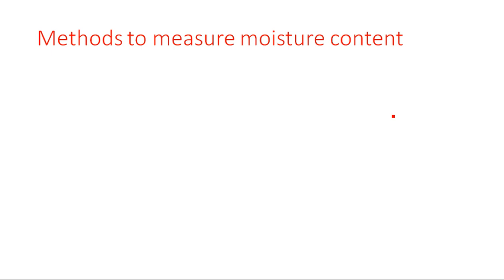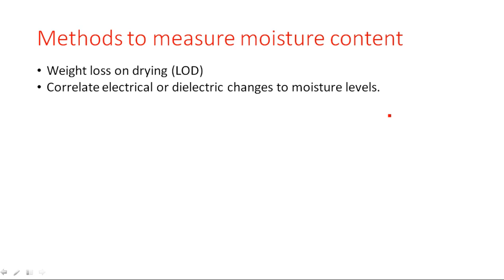So how do we go about the measurement of moisture? What are the different techniques we need to adopt for measuring moisture content in any particular area or environment? The first technique is weight loss on drying. By drying the material — for example a piece of wood — we can get the moisture content. The weight has to be reduced when keeping the water content alone, so weight loss on drying is the first method to calculate moisture content.